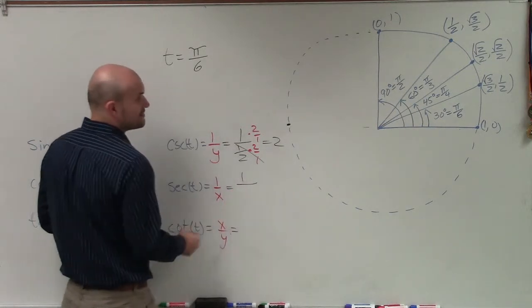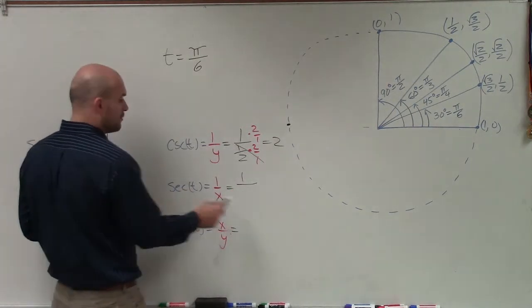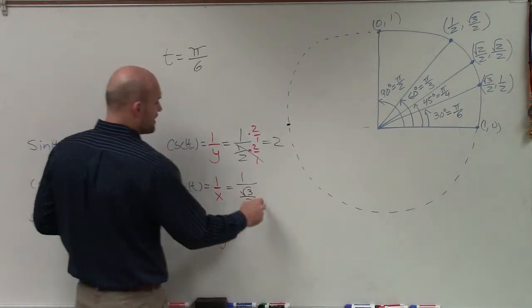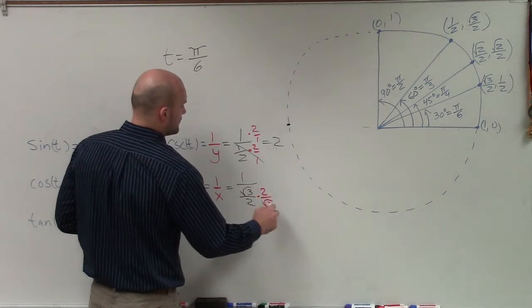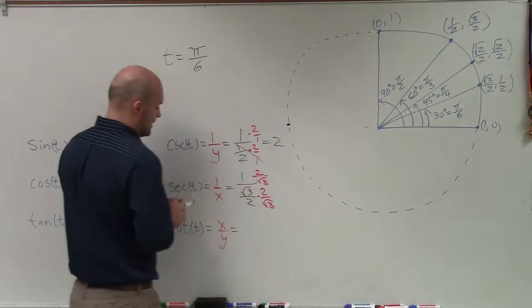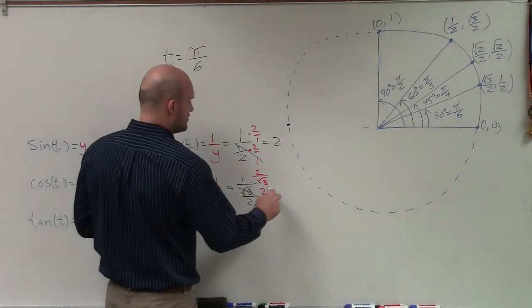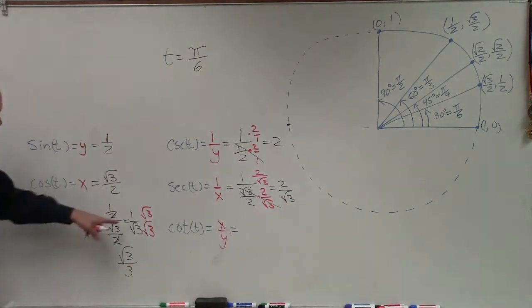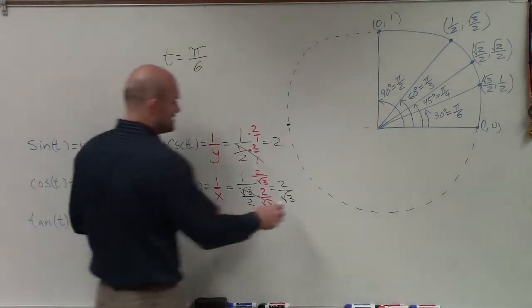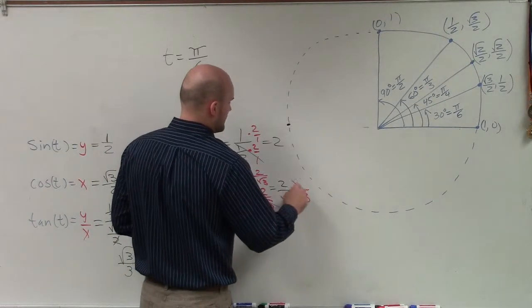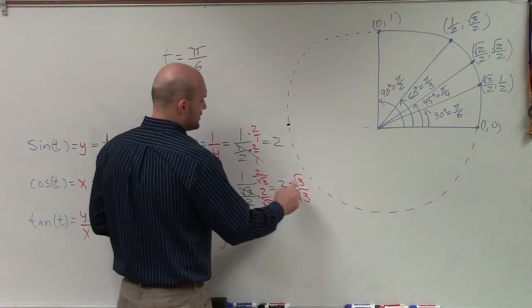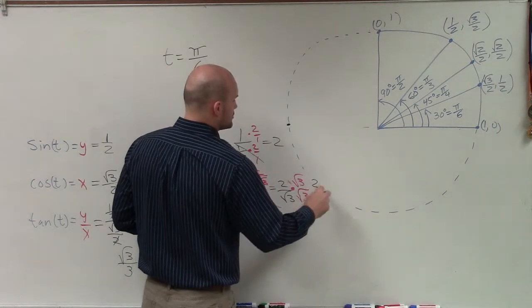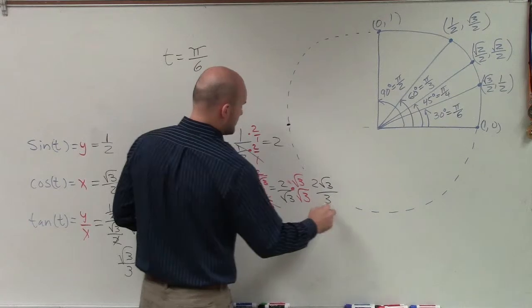And I can do that exactly the same thing over here as the secant is going to be 1 over x, which is square root of 3 over 2. So therefore, I'll multiply by the reciprocal again. And therefore, that multiplies out to 1. But now I'm left with 2 over the square root of 3. Very similar to what I had over here. So I have to rationalize the denominator again by multiplying by the square root of 3 on the top and the bottom. And so therefore, I'm left with 2 times square root of 3 over 3.